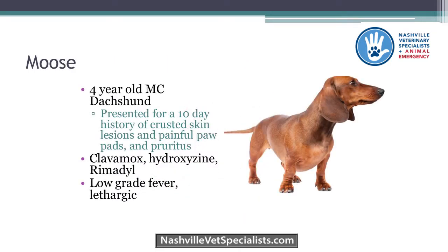I'm going to put a case in right away so we can start thinking clinically. Moose is a 4-year-old male castrated miniature dachshund who presented after about 10 days of crusted skin lesions. His paw pads were super painful — the owners first noticed he was lame and having trouble walking, almost like walking on eggshells. He was also a little itchy on some lesions. When he got to me, he was on Clavamox, hydroxyzine, and Rimadyl.